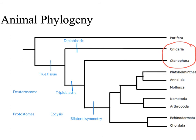Our next split has to do with embryonic development. We have a branch of protostomes, including most of the animals, and a branch of deuterostomes, which includes just the echinoderms and the chordates. This means that we are actually deuterostomes.